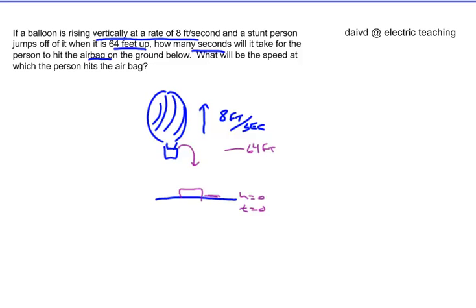So we've got an initial speed of going up 8 feet per second, and we're going to start at an initial height of 64 feet and drop down to the bottom. We also want to know what velocity we hit at — obviously it's going to be a downward velocity versus the positive 8 up. I'm expecting the velocity to be a negative answer coming down. One key piece of knowledge: acceleration based on gravity is negative 32 feet per second squared, going downward.